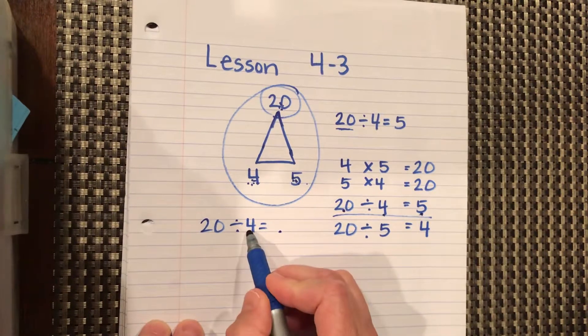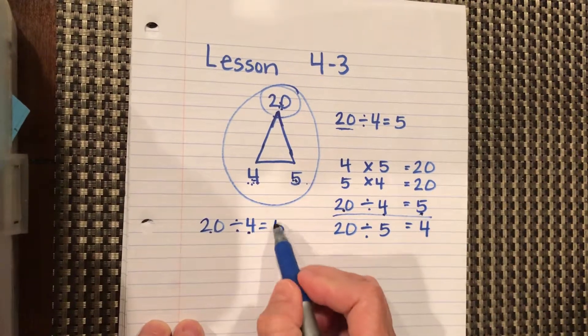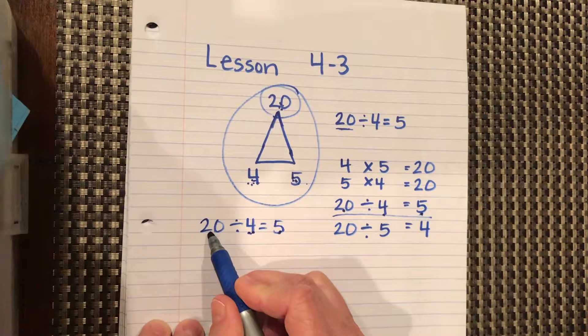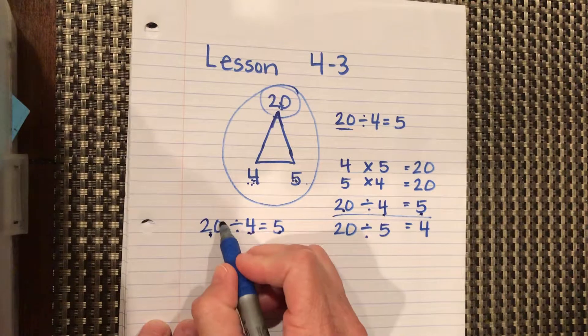So what number times 4 equals 20? Because division really is just, these two can be multiplied together to get the first number in your division problem, the dividend.